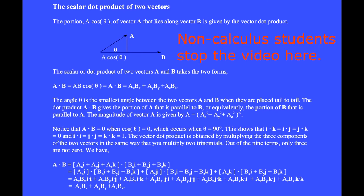Non-calculus students stop the video here. To obtain the component form of the dot product, we act as if we are multiplying two trinomials. Out of the nine terms, only three are not zero. We write vector A dot vector B, expanding vector A and its components dotted with vector B and its components.